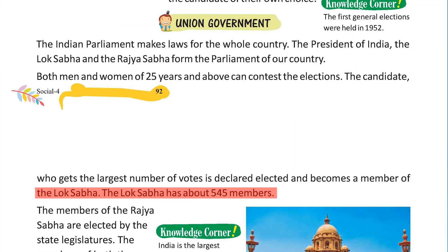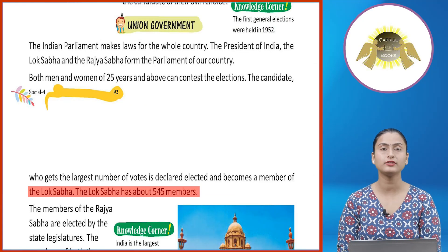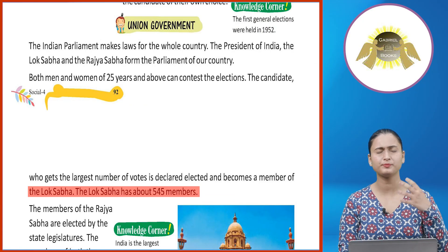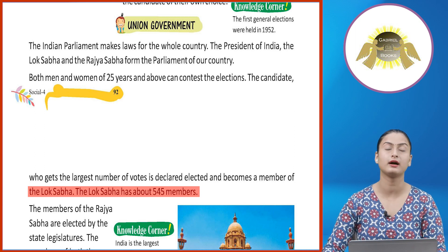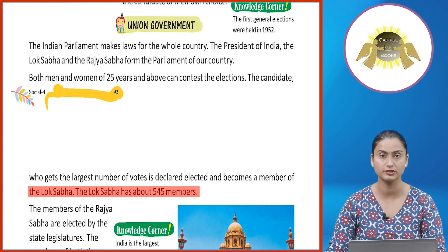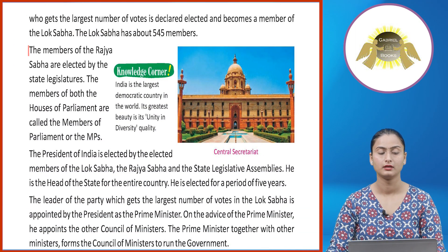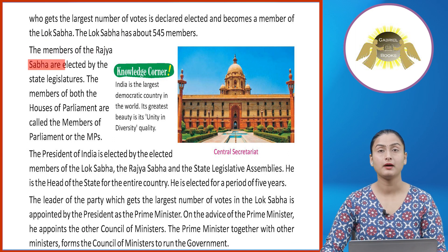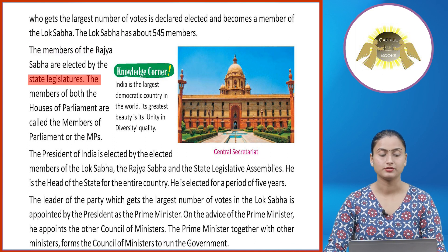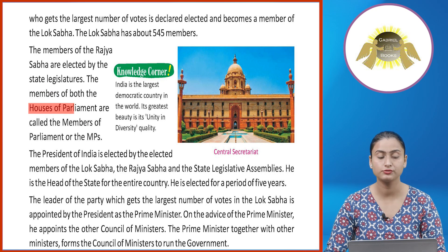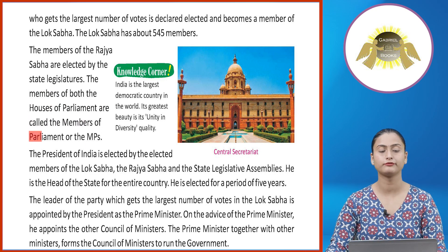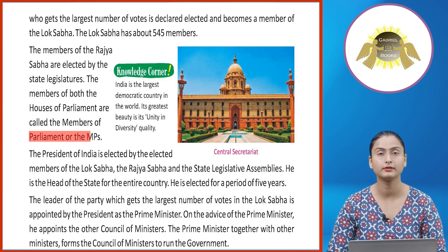The President of India, Lok Sabha, and Rajya Sabha together form the Indian Parliament. The members of the Rajya Sabha are elected by the state legislatures. The members of both houses of Parliament are called Members of Parliament, or MPs.